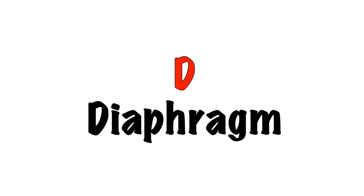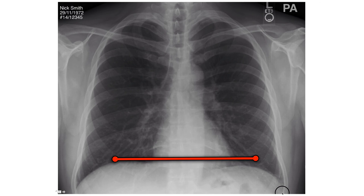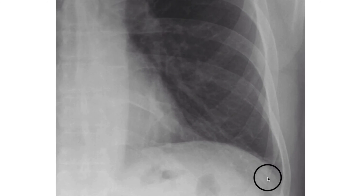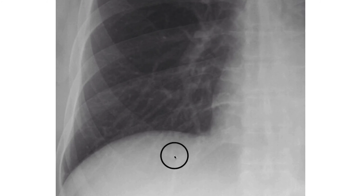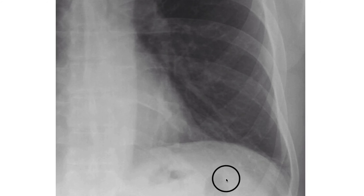D — Diaphragm. Each side of the diaphragm should appear as a dome with a sharp white edge against the adjacent black lung. The right hemidiaphragm is normally higher than the left by about 1–3 cm due to the liver underneath. The costophrenic angles are the areas where the diaphragm meets the ribs laterally. The cardiophrenic angle is where the heart meets the diaphragm. These angles should be clearly defined. Often, you will see the gastric air bubble under the left hemidiaphragm.